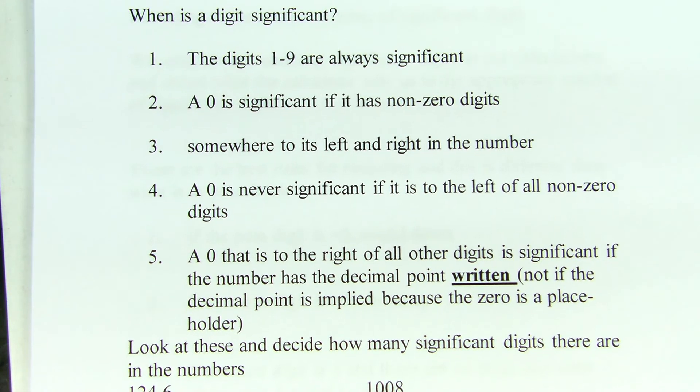And we have to be able to tell when a digit is written down on the paper whether or not it is significant. So, we have a set of rules to follow, and some of them are pretty straightforward, and one of them causes a lot of confusion on a regular basis for my students.